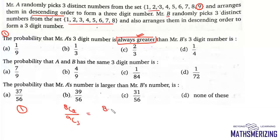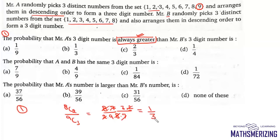So this is 8C2 divided by 9C3, which gives us (8×7)/(2) divided by (9×8×7)/(3×2). The 8 and 7 cancel, and the 2 cancels, so this probability is 1/3. There is a one-third probability that Mr. A's 3-digit number is always greater than Mr. B's 3-digit number.